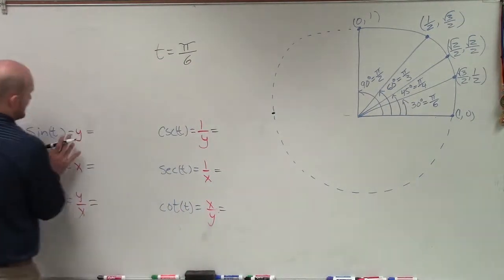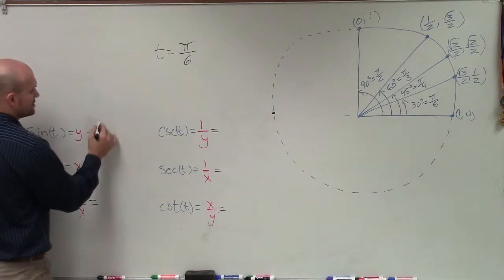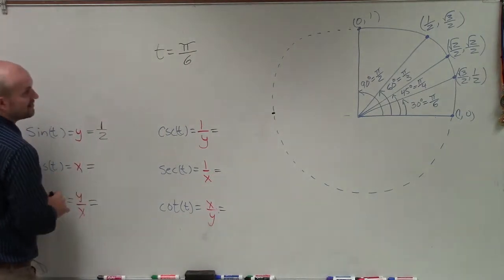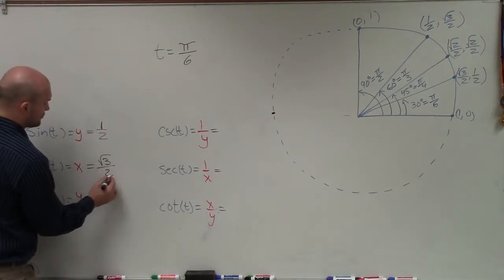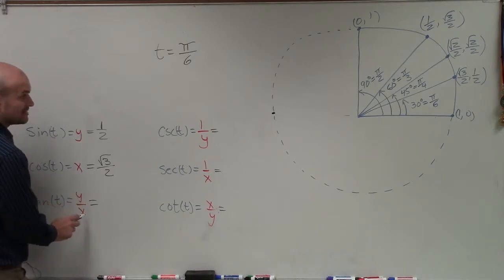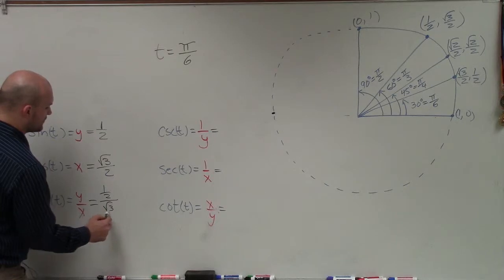So the sine of our angle is going to be equal to the y-coordinate of that point, which in this case is 1 half. The cosine of that angle is going to be equal to the x-coordinate, and the tangent is going to equal to the y-coordinate over the x-coordinate, where in this case, our y-coordinate is 1 half over square root of 3 over 2.